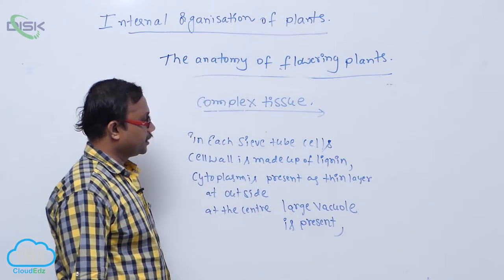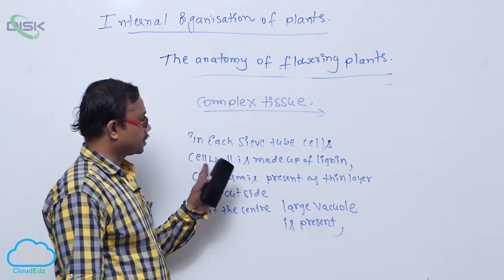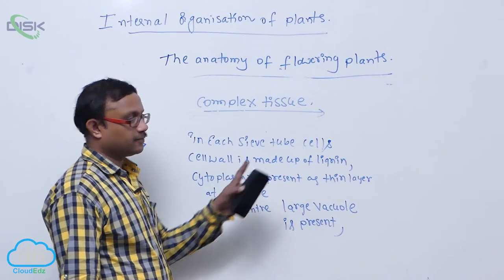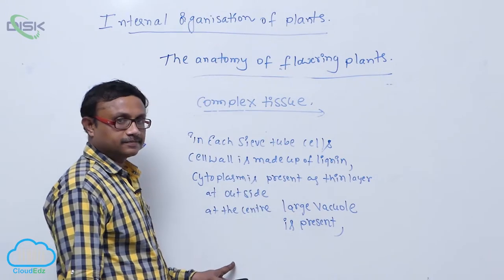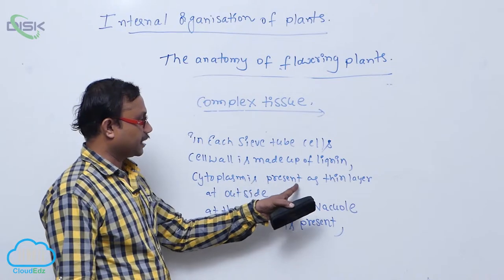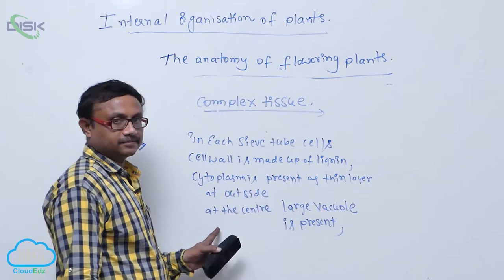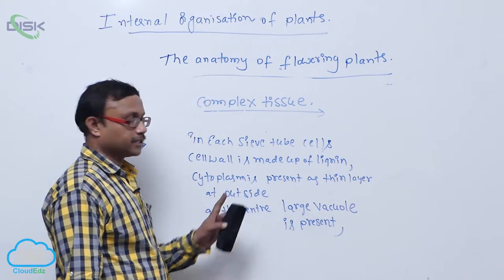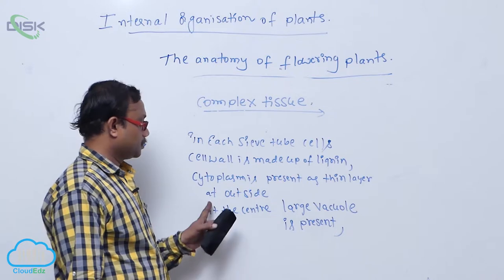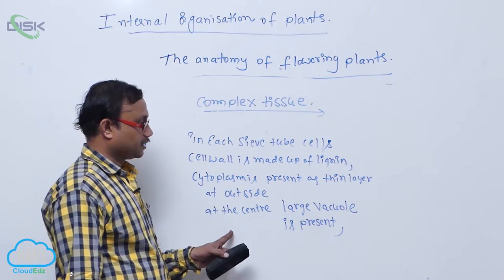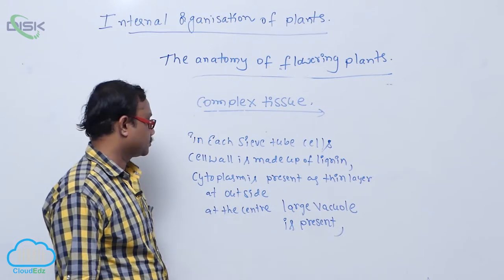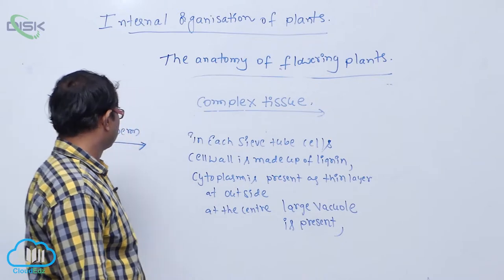In each sieve tube cell, the cell wall is made up of lignin. Cytoplasm is present as a thin layer at the outside. At the center, a large vacuole is present.